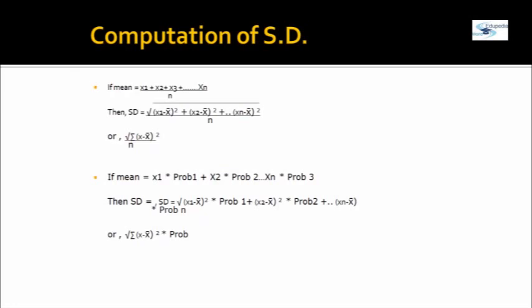In case you have probability figures, you multiply the return with the probability to get the mean figure. Then compute the difference between each return and the mean to find the variation, multiply each squared difference by its probability, and take the square root of the whole value to get the standard deviation.